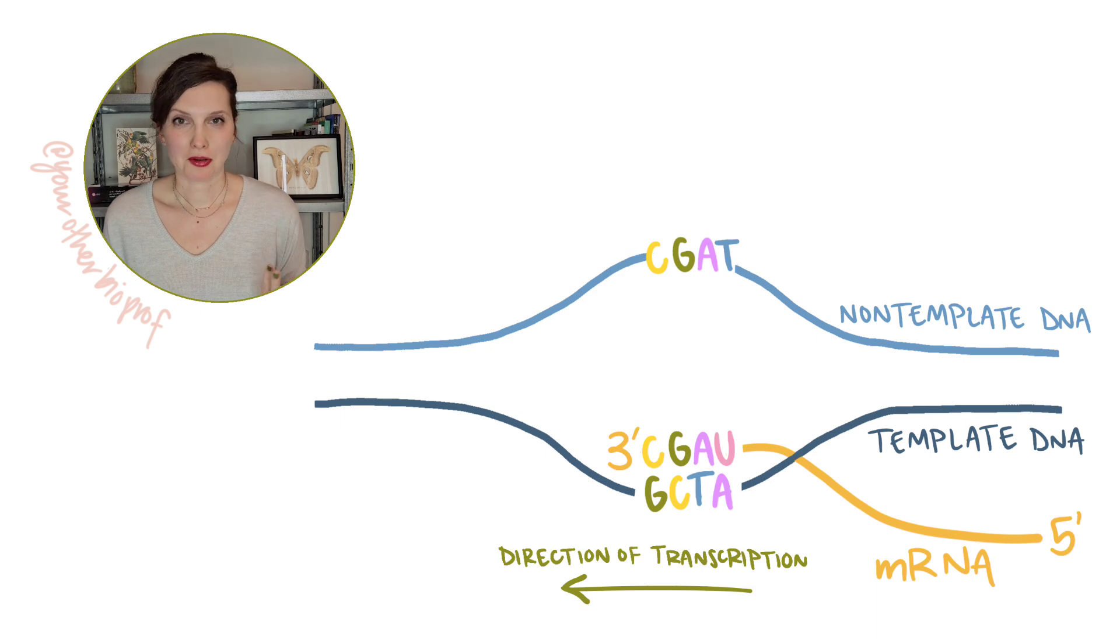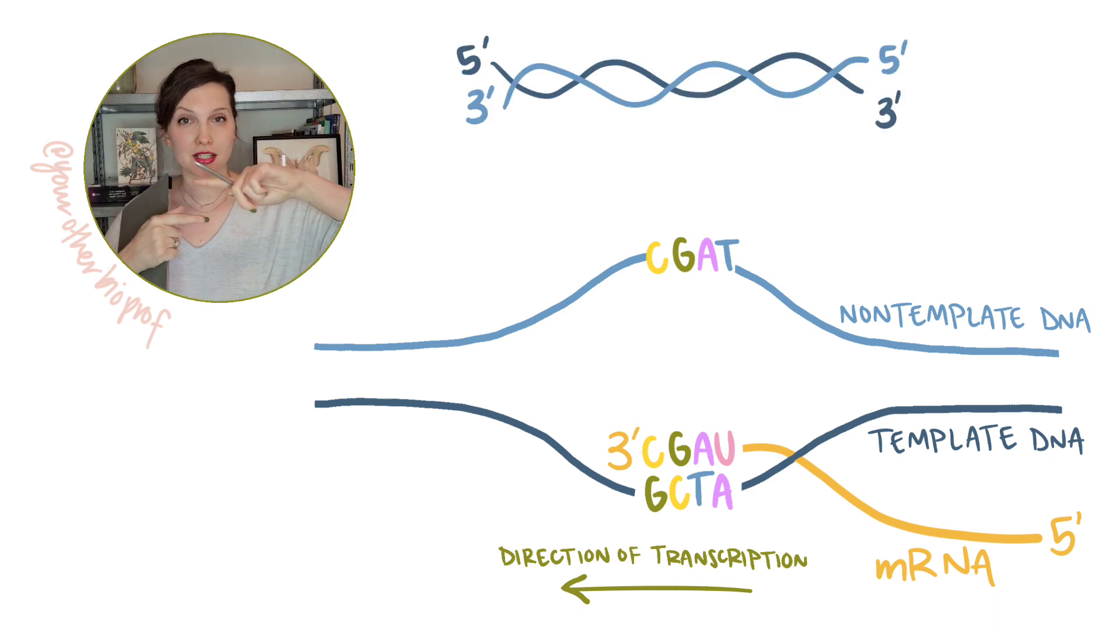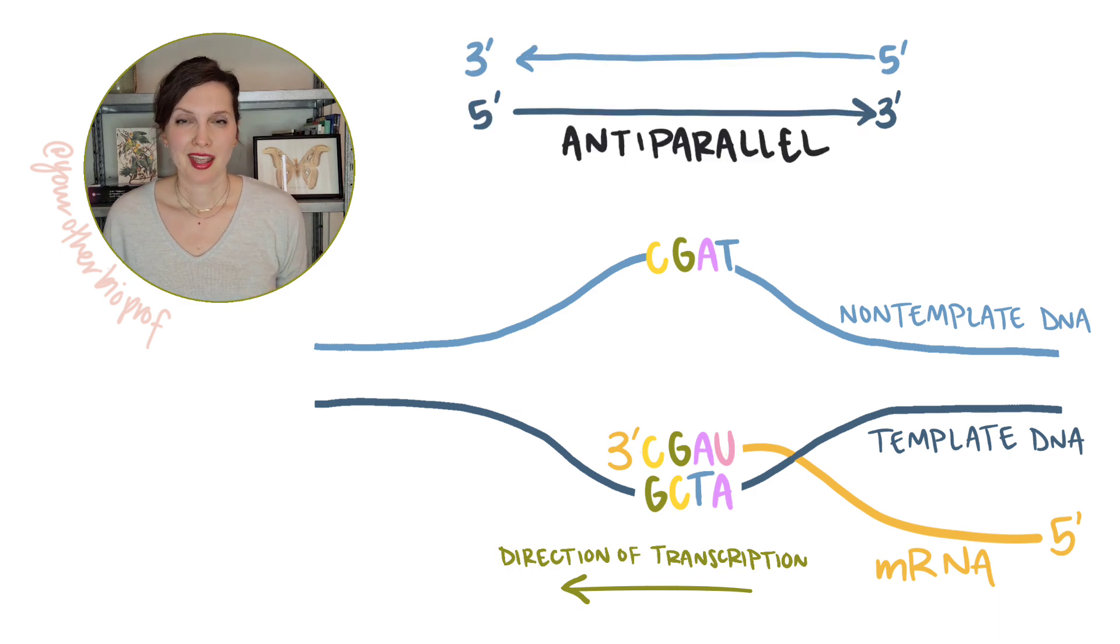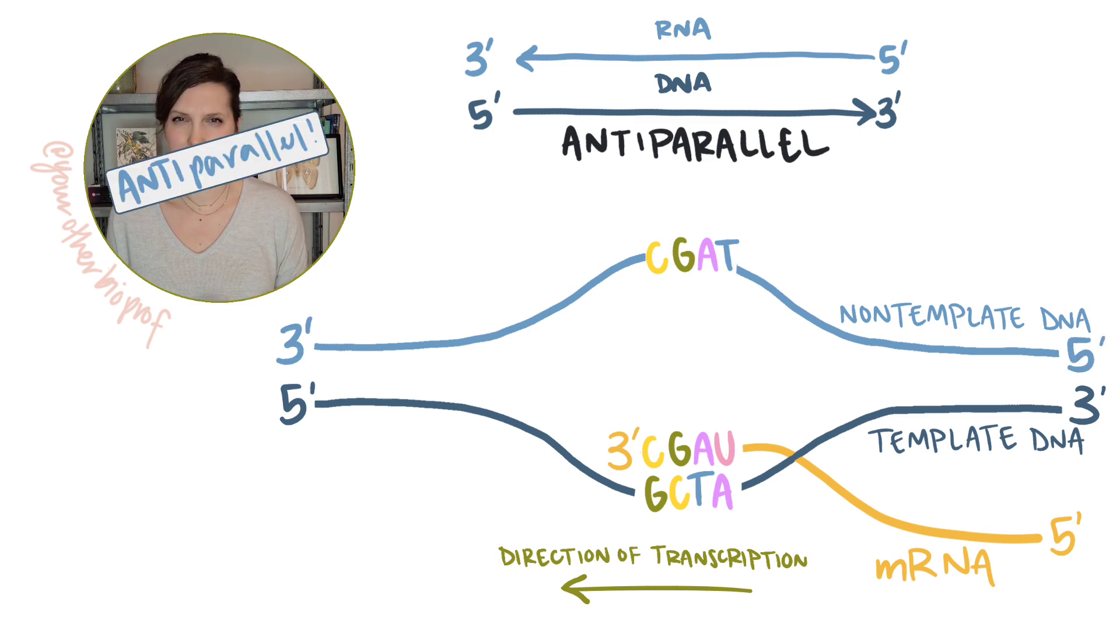We can add on the five prime and three prime ends to the DNA now. Now you may remember that when you bring two strands of DNA together, they have opposite directionality. We call that anti-parallel. And that's true whenever you bring nucleic acids together, whether that's DNA-DNA, RNA-RNA, or our little DNA-RNA hybrid that we've got here. The RNA that's being transcribed is complementary and anti-parallel to the template strand of DNA. And the non-template strand of DNA is complementary and parallel to the template strand of DNA.